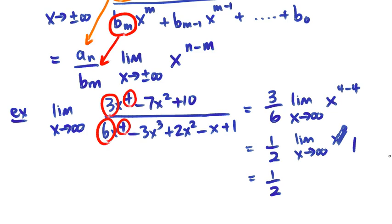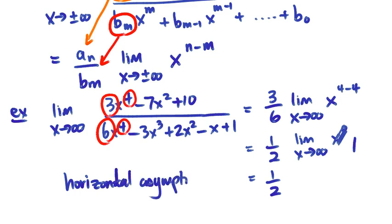That means there is a horizontal asymptote at y equals 1/2.